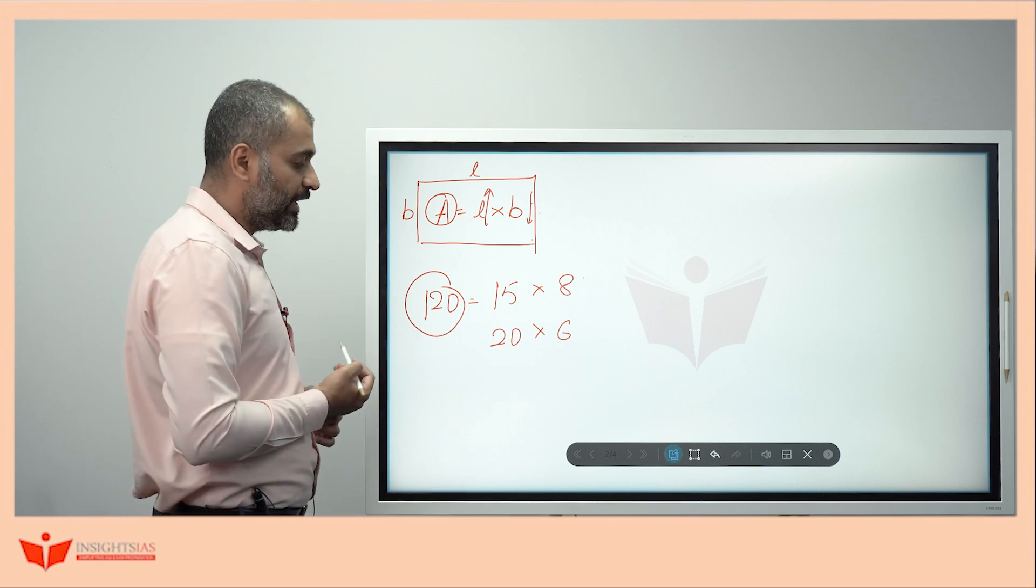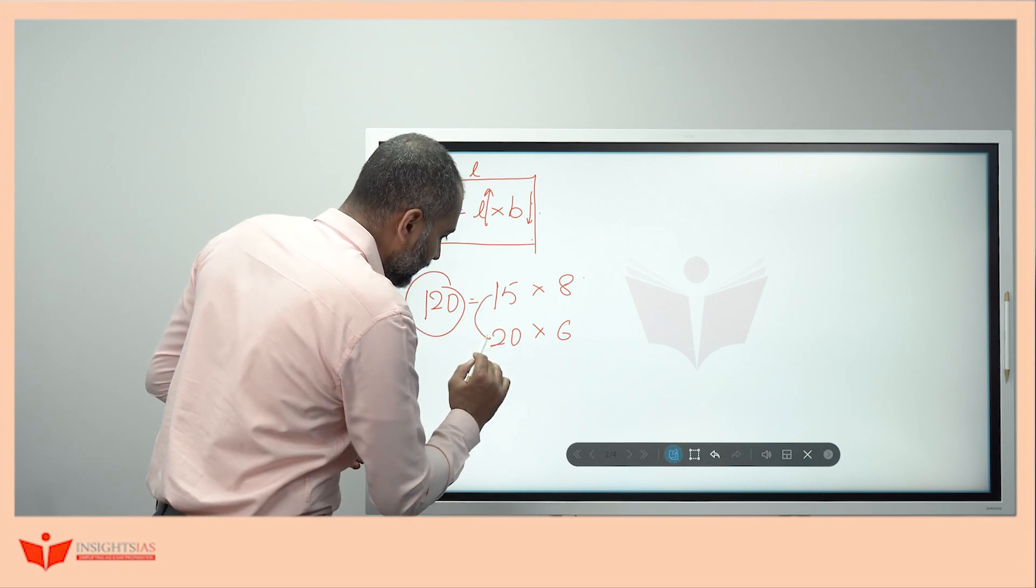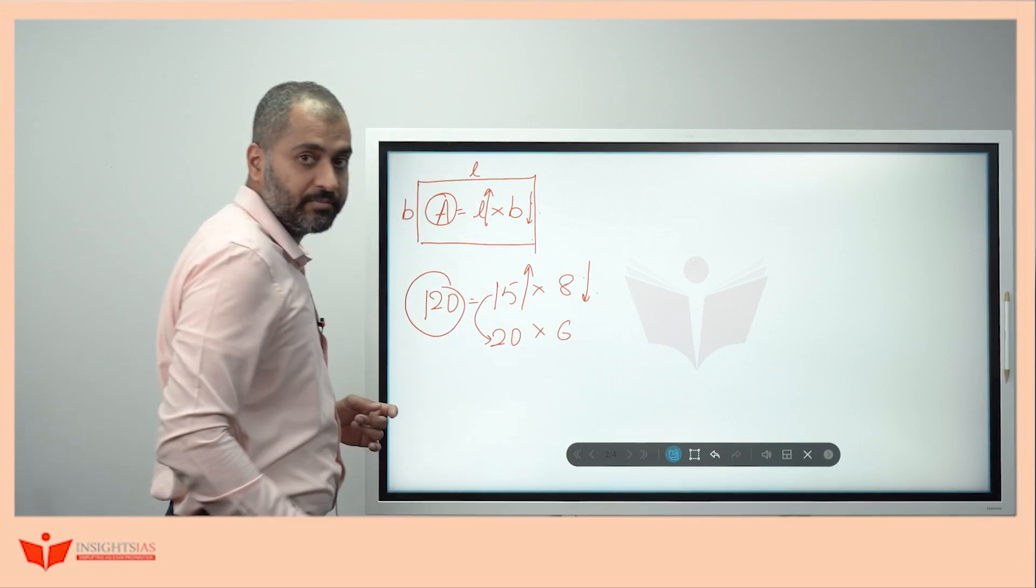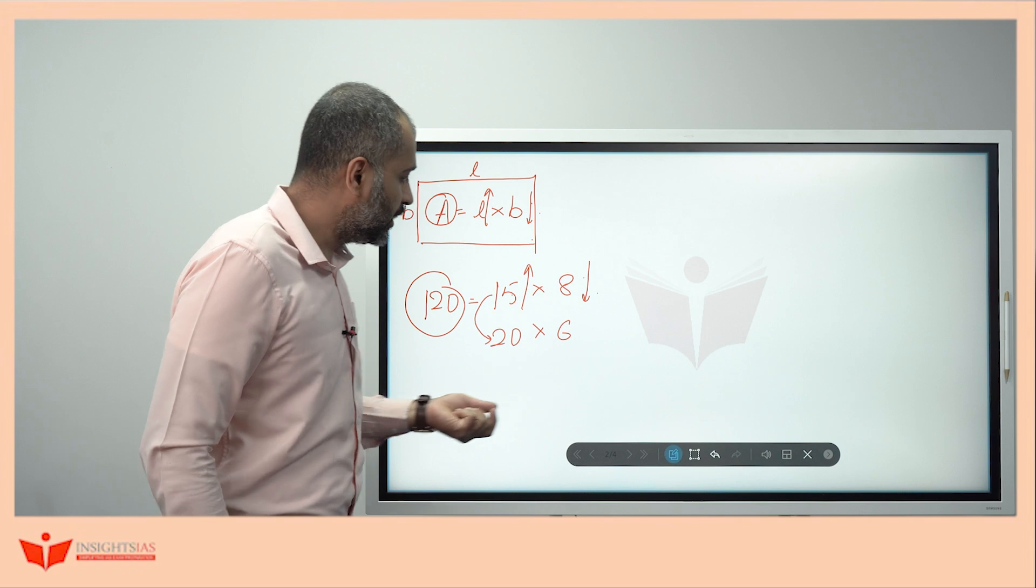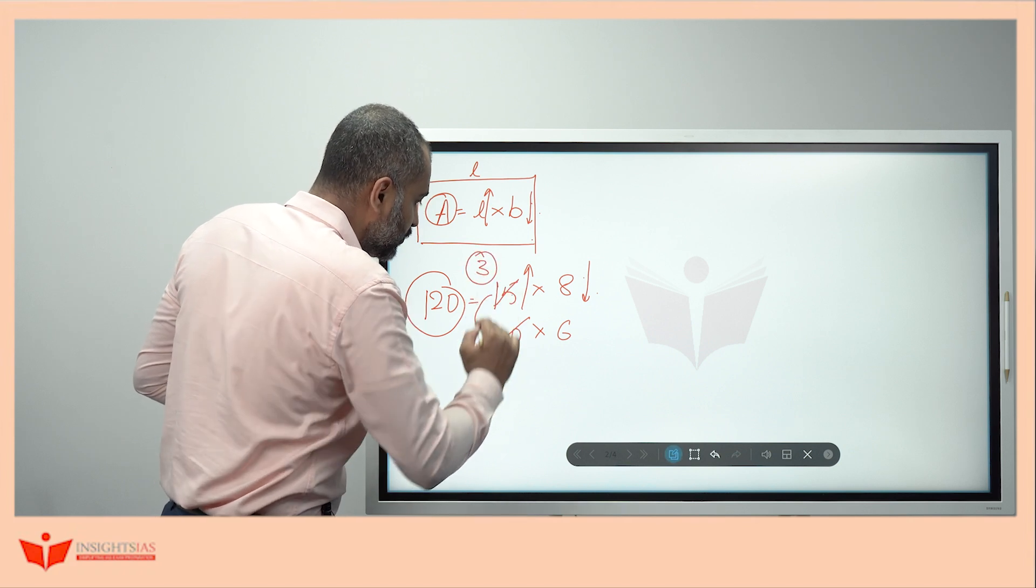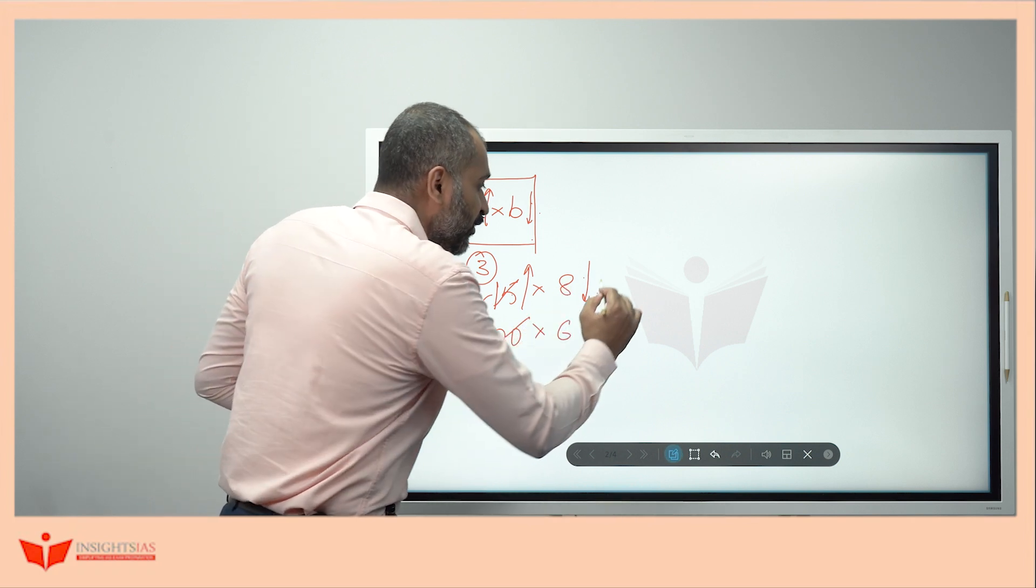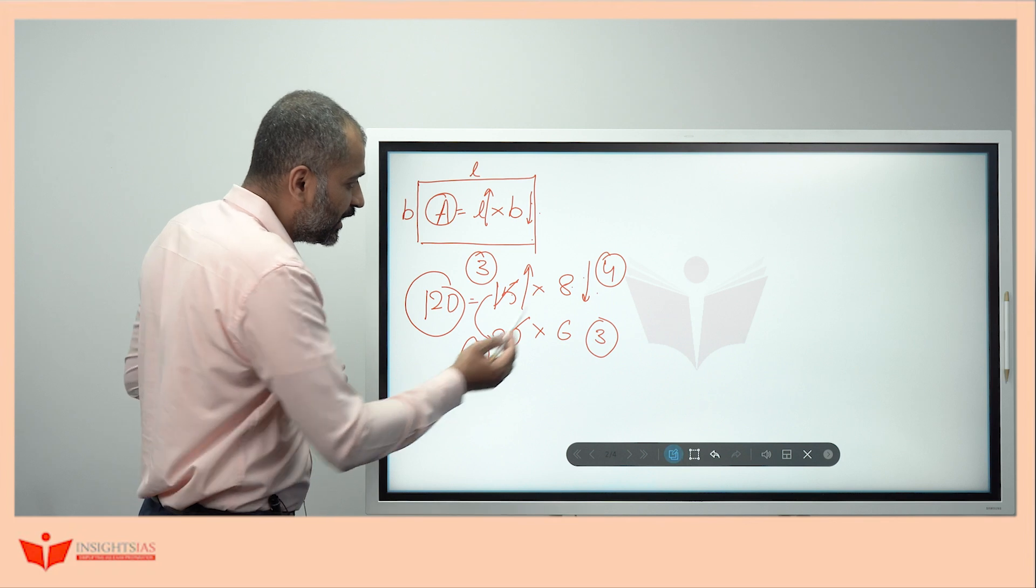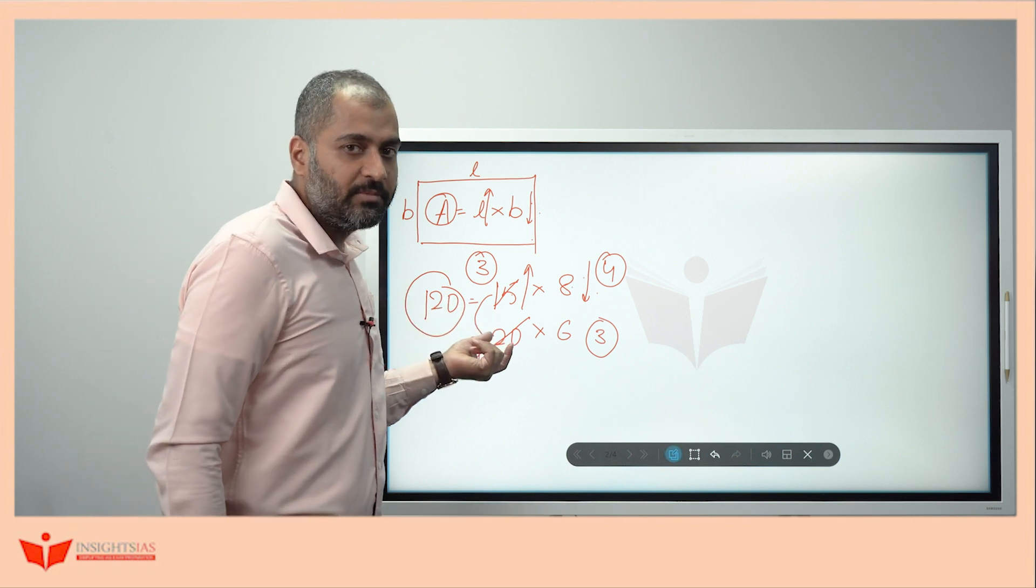Now, you have changed this 15 to 20, means you are increasing this one. If you increase this value, this value has to be decreased. 120 is a result of product of these two. If you increase one of the variable, other has to come down. 15 has become 20. If I take the ratio here, 15 and 20 are in what ratio? 3:4. If this has changed from 3 to 4, this has to change from 4:3. The ratio is 4:3. Look here. 8 and 6 are in the ratio 4:3 only. Based on the same concept, the question is asked.